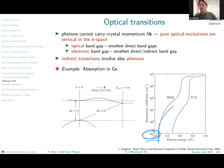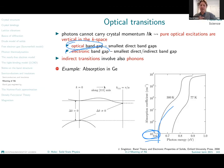Please distinguish between the optical band gap — which is the smallest direct band gap — and the electronic band gap, which is the indirect band gap. In the case where the optical and electronic band gaps are the same, we are describing a direct band gap semiconductor.